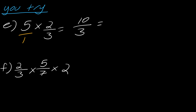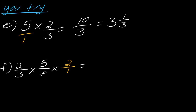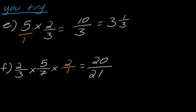If you want to convert 10 thirds to a mixed fraction, ask how many times 3 goes into 10 — that's 3 times with a remainder of 1, so 3 and 1 third. For F, rewrite the whole number 2 as 2 over 1. Then 2 times 5 times 2 is 20 on top, and 3 times 7 times 1 is 21 on the bottom, giving us 20 over 21.